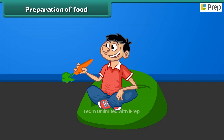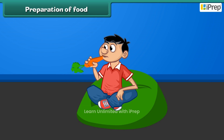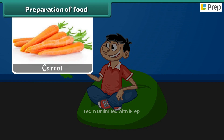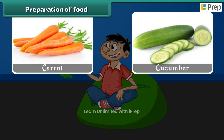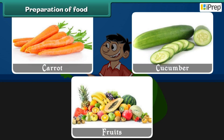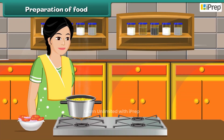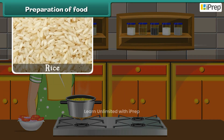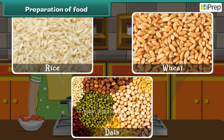Preparation of food: Some foods are eaten raw to maintain their nutritive value — these include carrot, cucumber and fruits. Cooking makes the food tasty, softer and easy to digest. We cook rice, wheat and dals before eating.